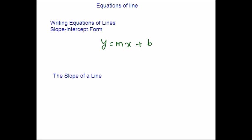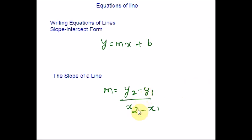The slope indicates the direction in which a line slants as well as its steepness. Slope is sometimes described as rise over run. If the slope is positive, the line slants to the right. If the slope is negative, the line slants to the left. As the slope increases, the line becomes steeper.